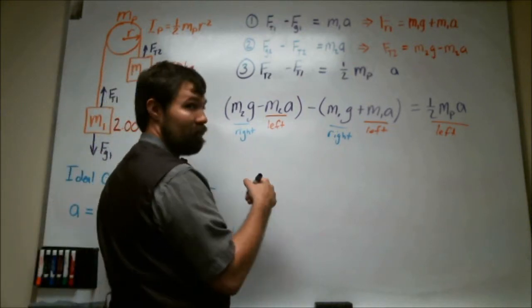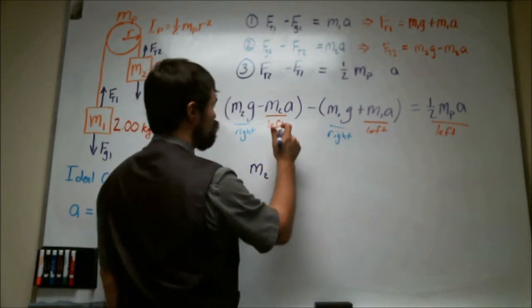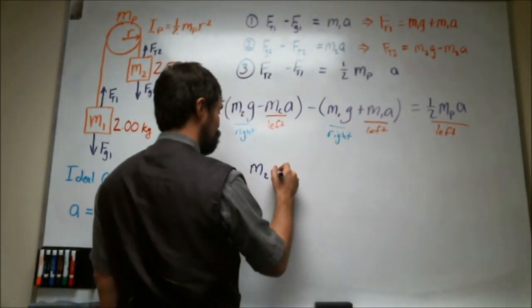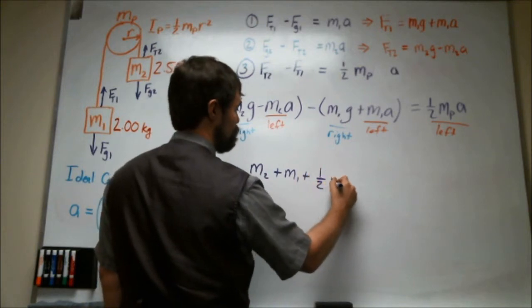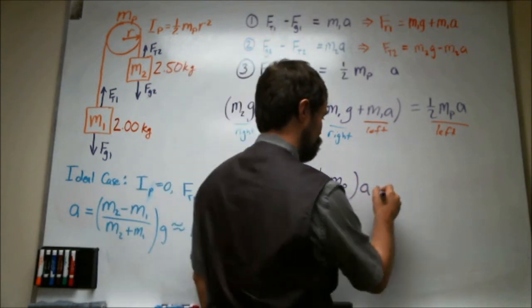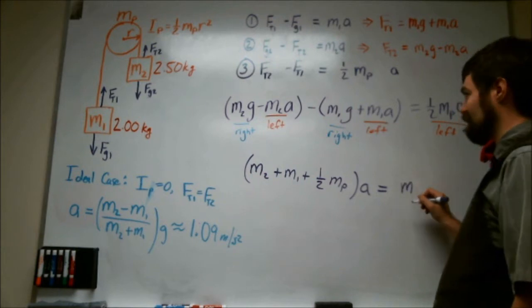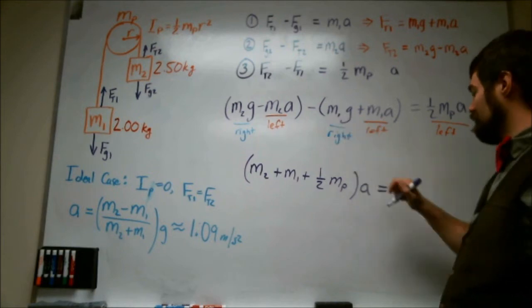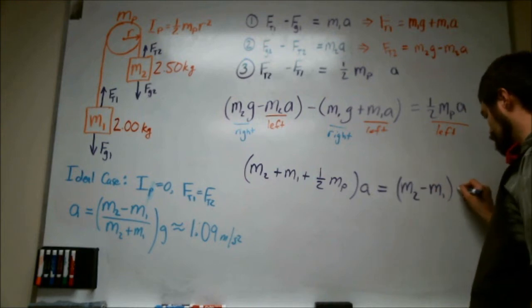I end up with, and I'm going to distribute the G's and the A's as well, M2 plus M1 plus Mp over 2 times A. That is going to be equal to M2 minus M1 times G.